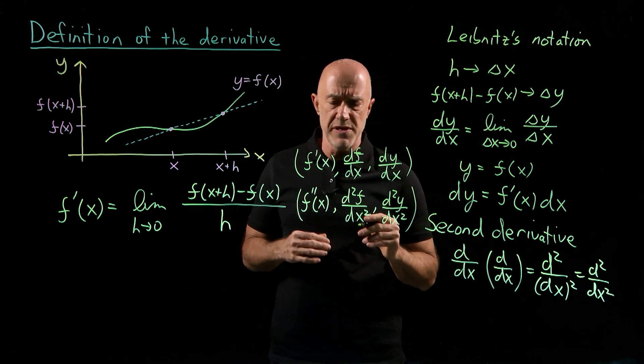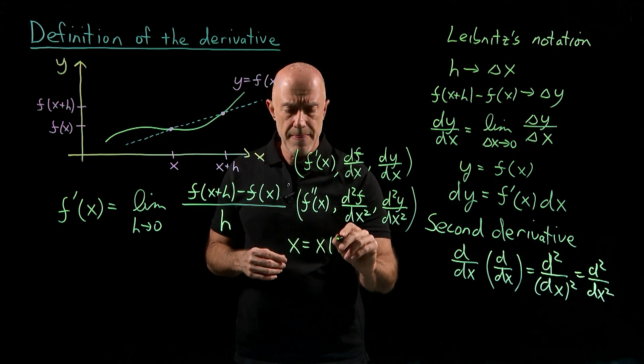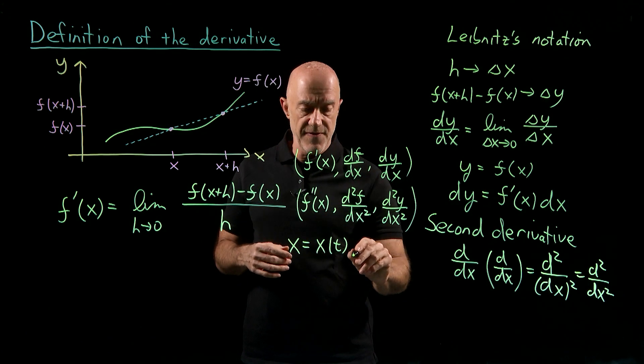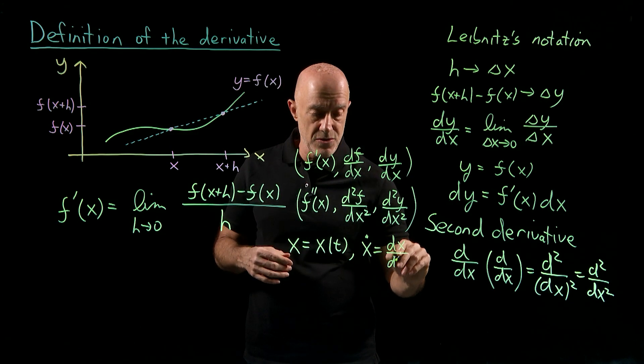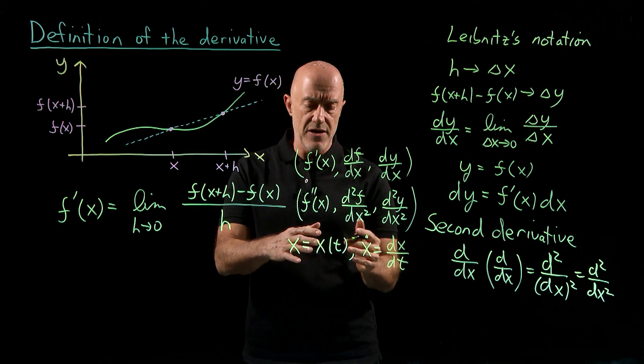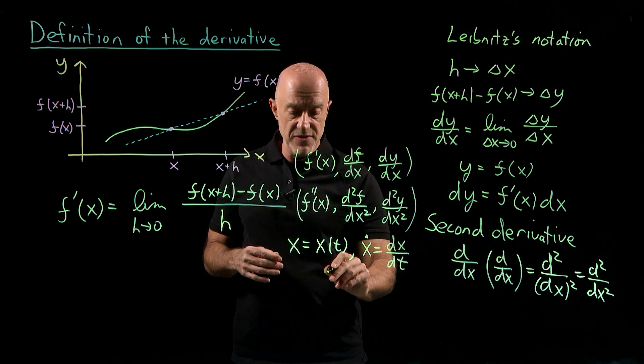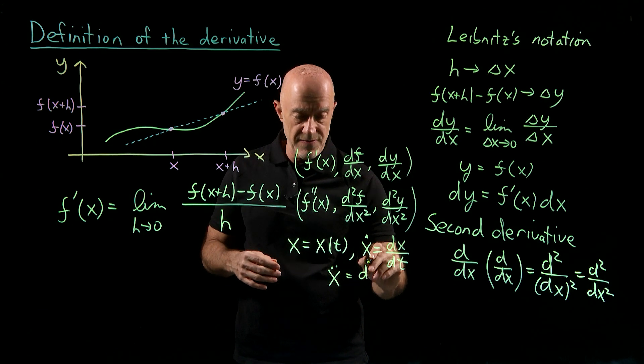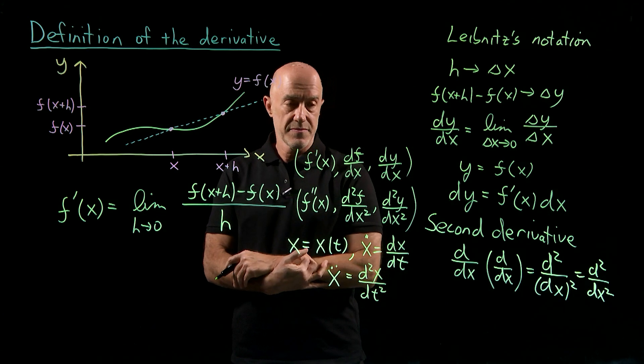There's one more notation you should be familiar with. If x was a function of time, then we can use what's called Newton's notation, which would be defining the x dot to be the derivative of x with respect to time. Newton's notation only works when we're talking about a function of time, of the time variable. The second derivative generalizes then to x double dot, which would be the second derivative of x with respect to time squared.